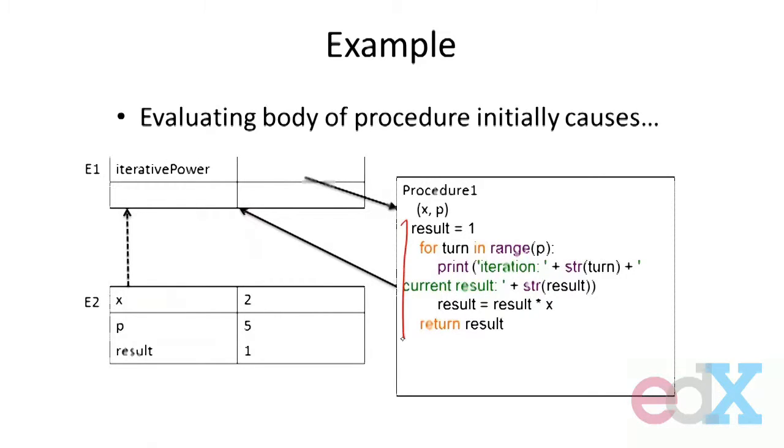That's really cool because now I've reduced the computation to a simpler computation. I'm evaluating this sequence of expressions relative to this environment, and that environment contains the bindings I want. The first expression says bind result to 1, and that happens in this environment, not up in the global environment.